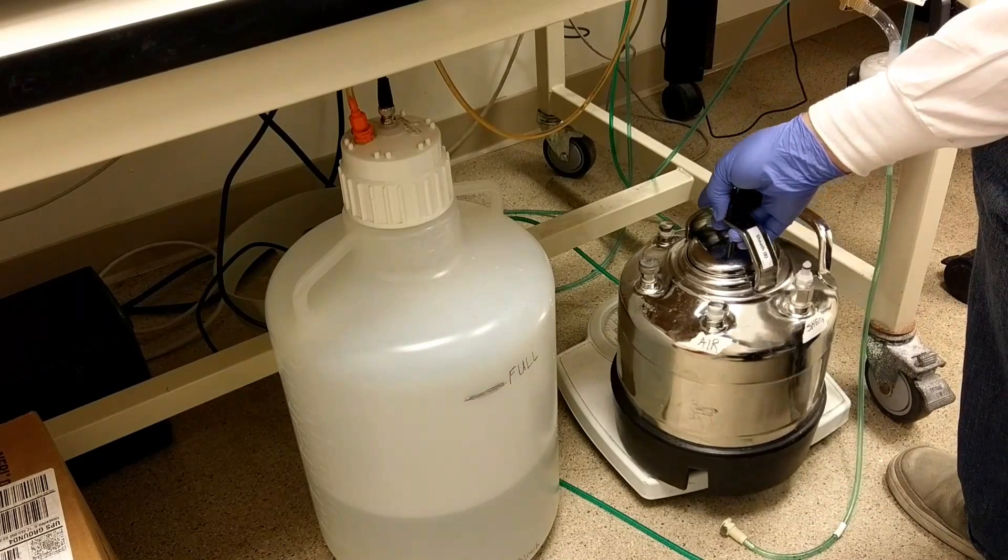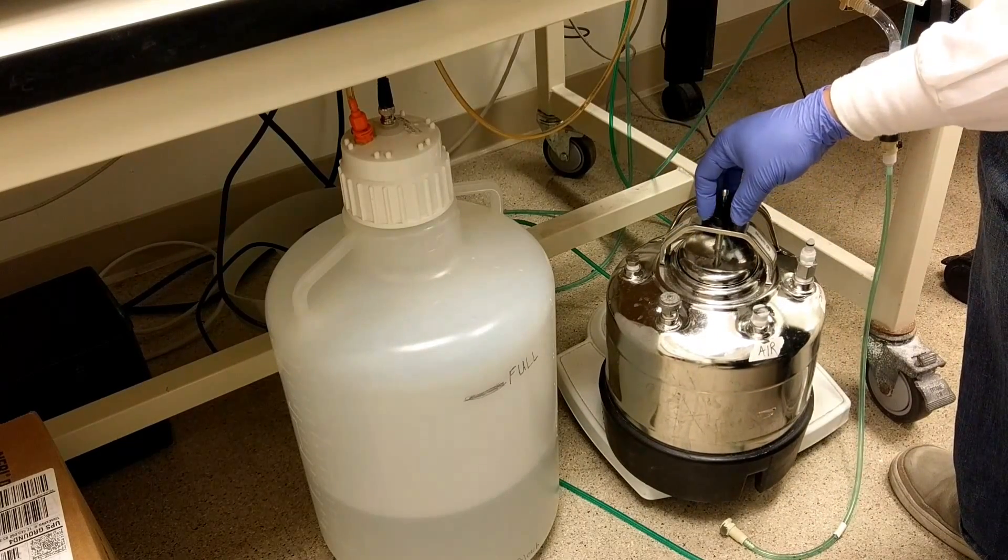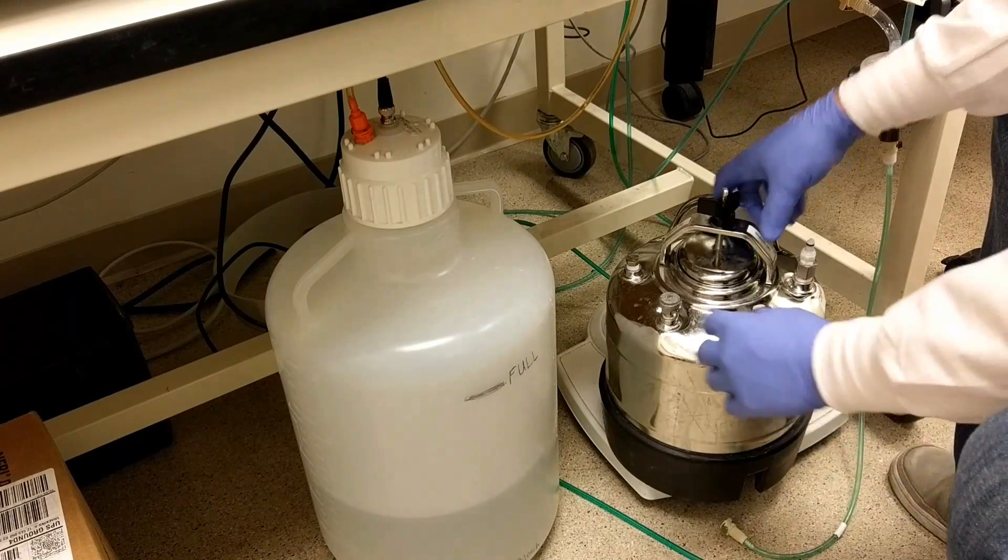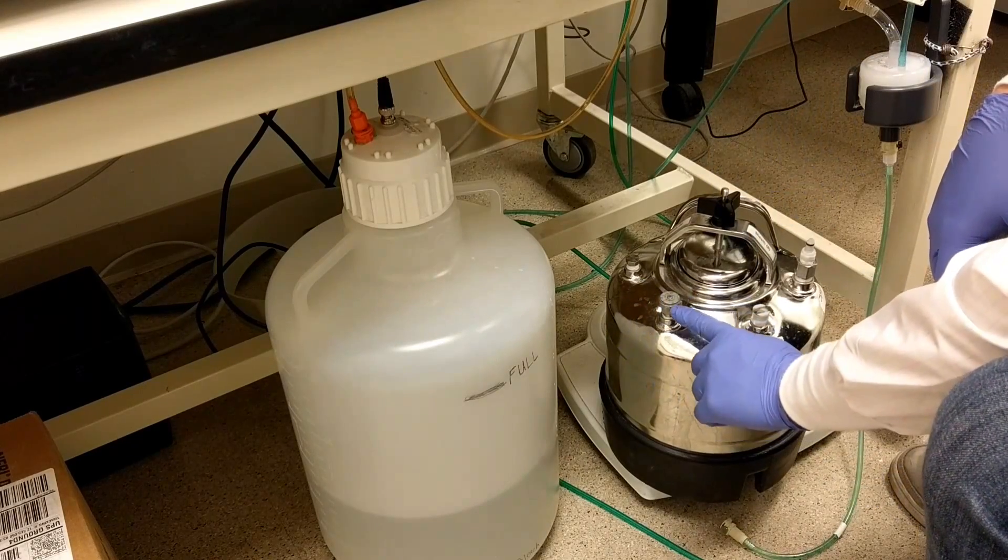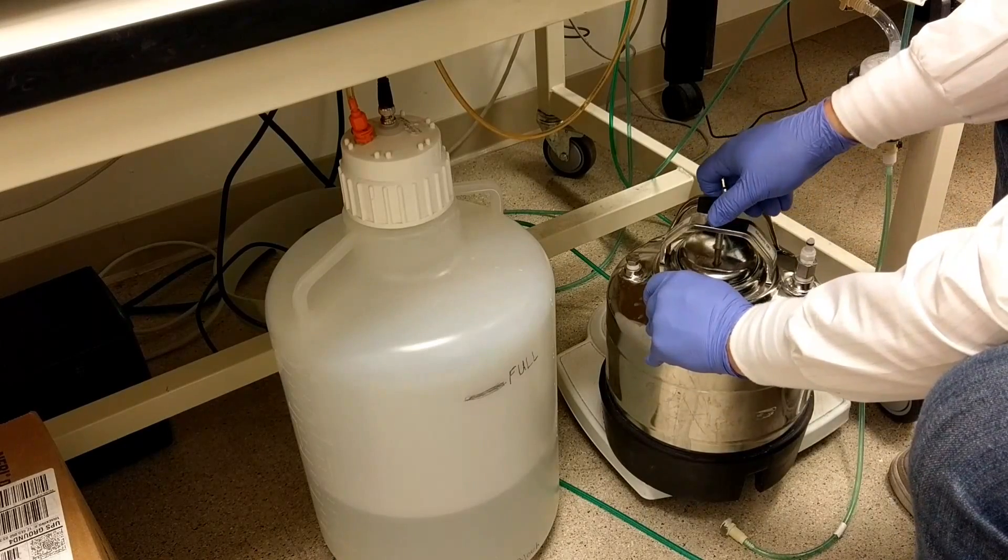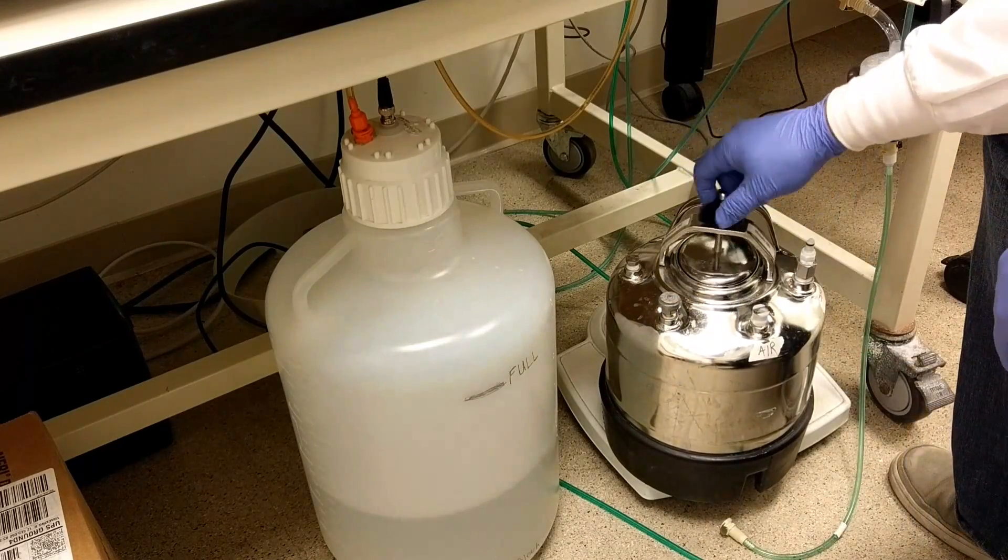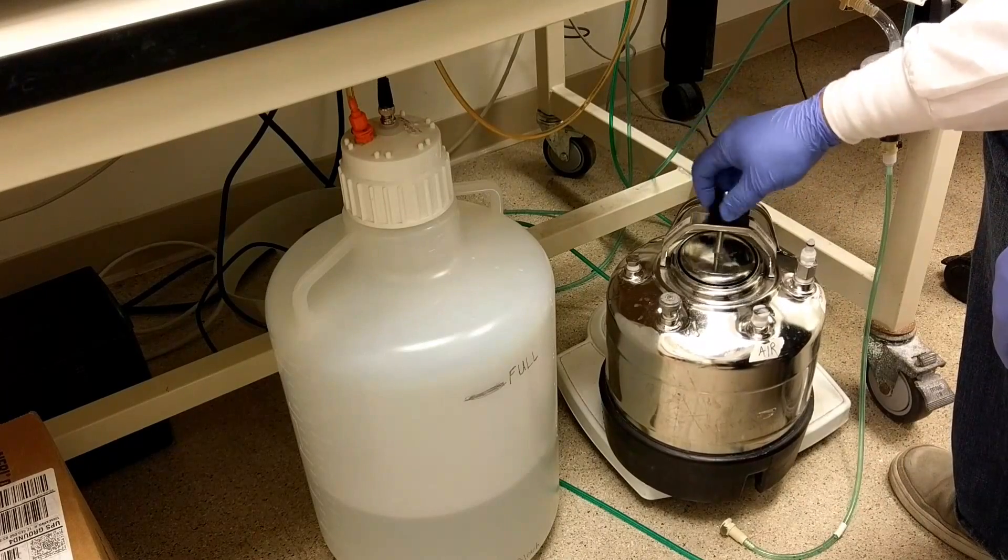In addition to removing the lines, you'll have to depressurize the tank or you'll never get the lid open. To depressurize, you're going to lift up this pressure release valve and you should hear a hissing of air. Then you can unscrew the lid and now the tank will be able to open.